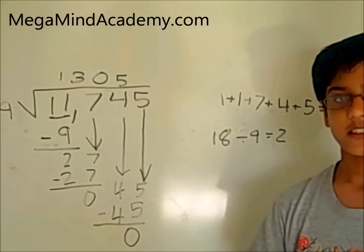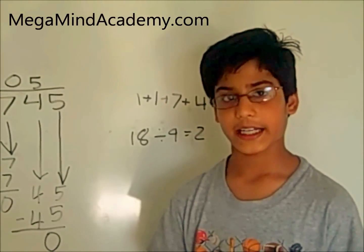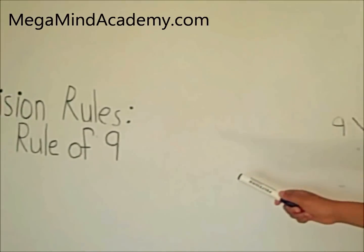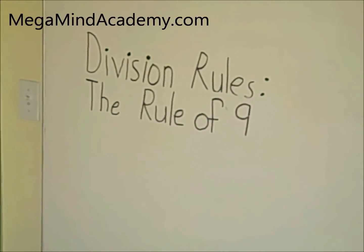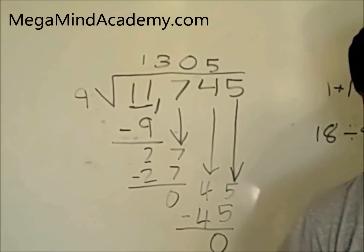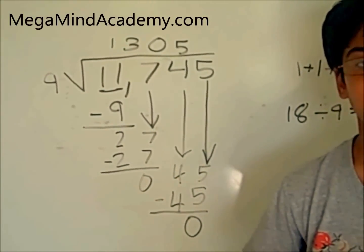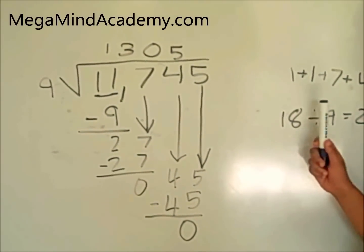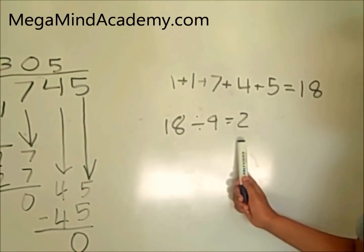Today we learned about divisibility rules — the rule of 9. In order for a number to be divisible by 9, you need to add up all the digits, and the total of the digits has to be divisible by 9. Like 18 divided by 9 is 2.